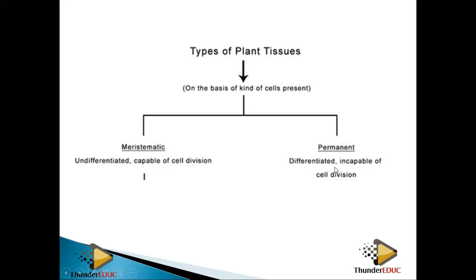Permanent tissues have differentiated — they are done with modification and cannot change into another cell structure. Think of it like a baby, which has the ability to modify and be flexible, versus a 60-year-old person who has grown and cannot change. Similarly, meristematic tissues can undergo cell division, while permanent tissues cannot.